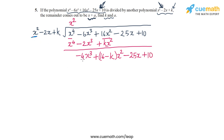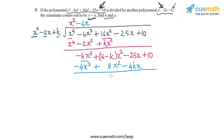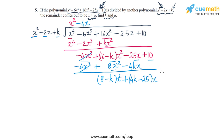In the next step we need to turn x squared into minus 4x cubed, so we use the multiplier minus 4x. This generates minus 4x cubed plus 8x squared minus 4kx. Subtracting, the minus 4x cubed terms cancel. We get (8 minus k) times x squared, then (4k minus 25)x as the linear term, and the constant term plus 10.